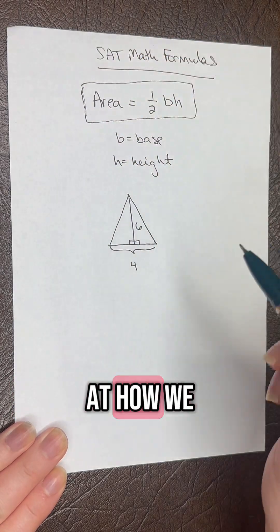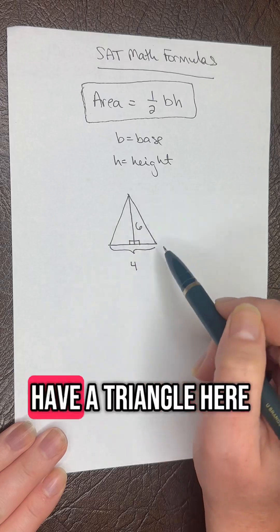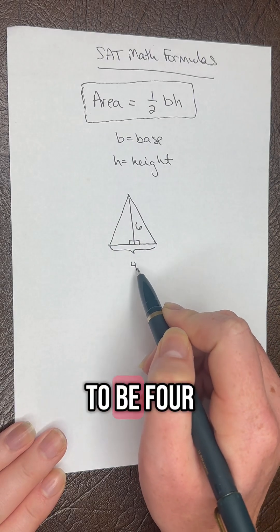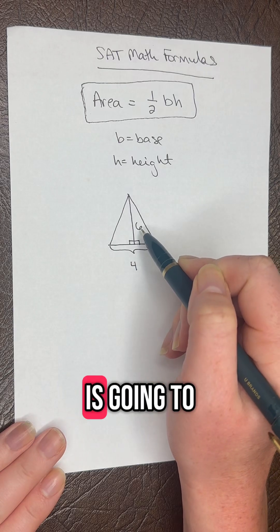Now let's look at how we would apply this. If we have a triangle here, the base, the bottom, is going to be 4 and the height is going to be 6.